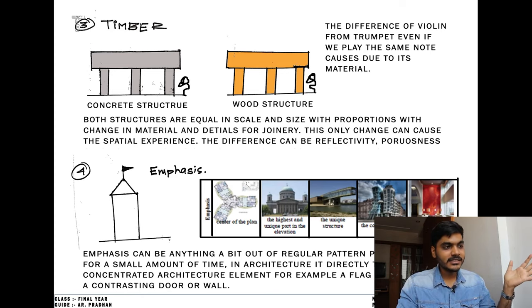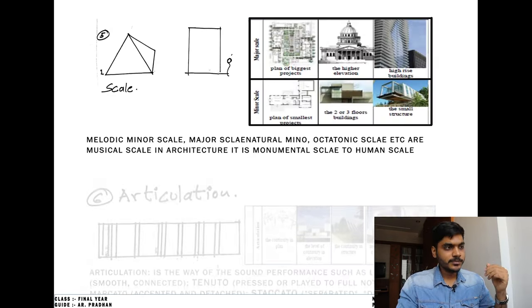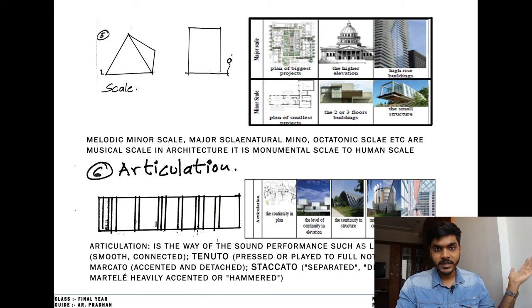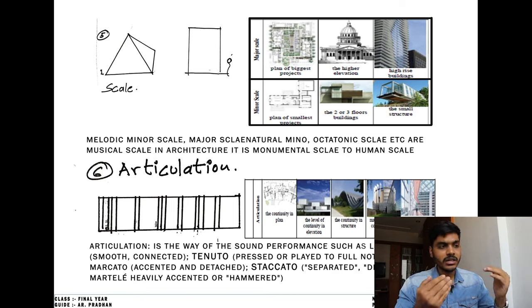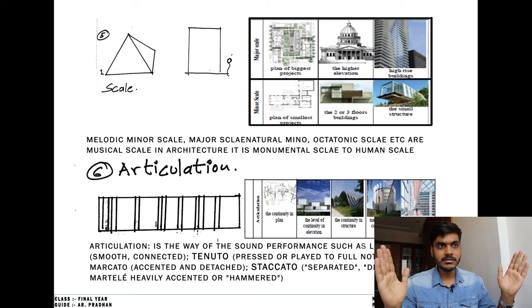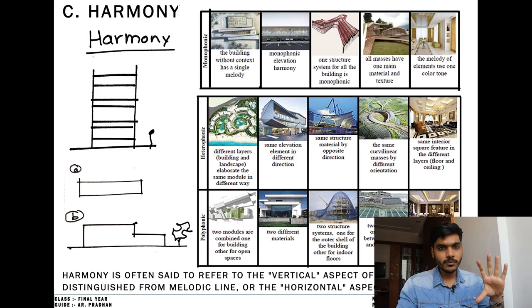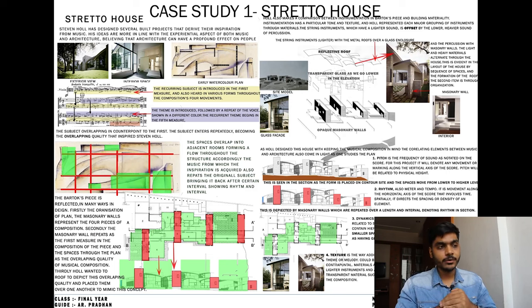Next is emphasis — it can be a flag or a note in music. Then scale: in a residential bungalow it might be three to nine meters, versus a monumental scale like a 50-story skyscraper or a pyramid — in music it's like major or minor scale. Articulation is the way sound is performed, like legato or staccato — staccato means notes closely packed, legato means far apart — similar to the placement of columns, windows, or doors. This is harmony, referred to as the vertical aspect of music, distinguished from the melodic line or horizontal aspect. You can screenshot this part.